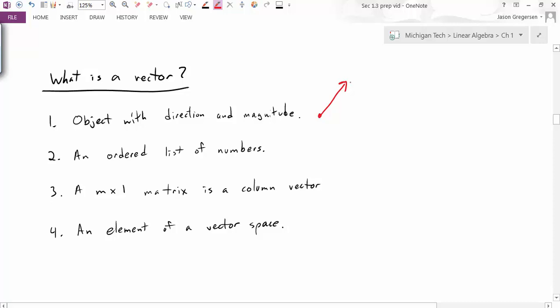But there are many other ways we can think about or represent vectors. The second one listed here is as an ordered list of numbers. So, for instance, I could create a list, the list 1, 2, and this would be called a vector.